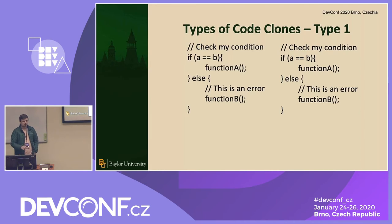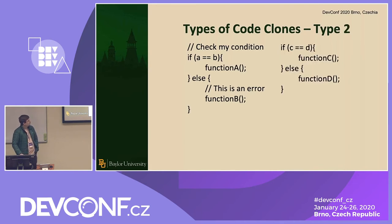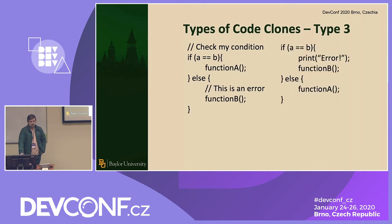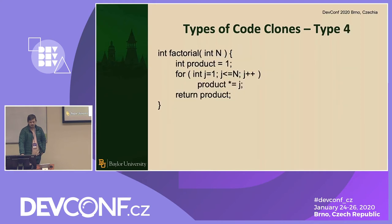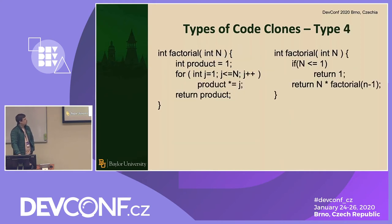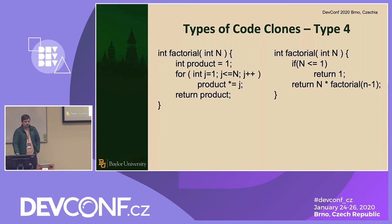This is an example: a Type 1 clone is a literal copy-paste — Ctrl+C, Ctrl+V. Type 2 is a little different — comments can be removed, variables changed, but it's still ultimately the same piece of code. Type 3 involves reordering and adding or removing lines, just changing it up enough. Then Type 4 — this is the classic example everyone uses: factorial. These two pieces of code do the exact same thing, but one is iterative, one is recursive. Syntactically they are not similar at all, but semantically they do the exact same thing.